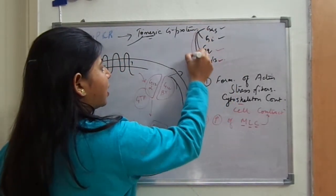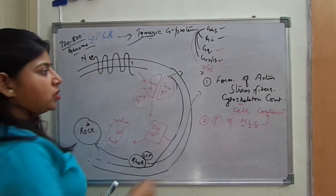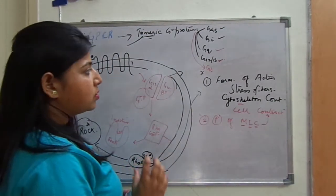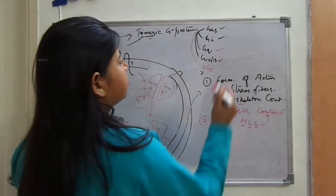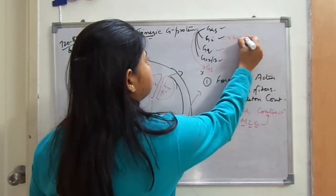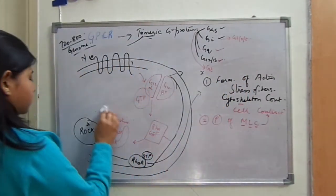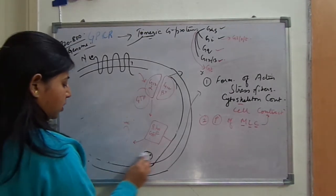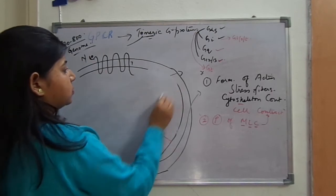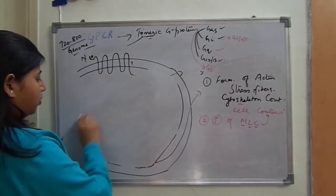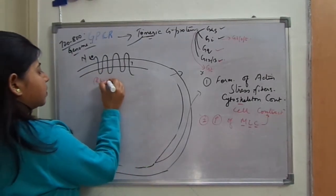One more class of trimeric G-protein is GT, which stands for transducin. This type of G-protein coupled receptor is responsible for vision. It is sometimes written as G-IOT, but this is not an inhibitory G-protein. We can discuss this in this lecture on trimeric G-proteins.